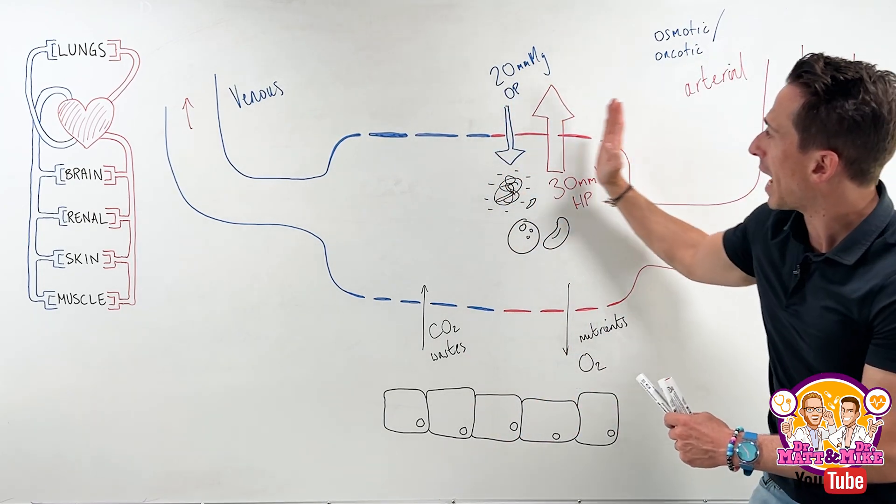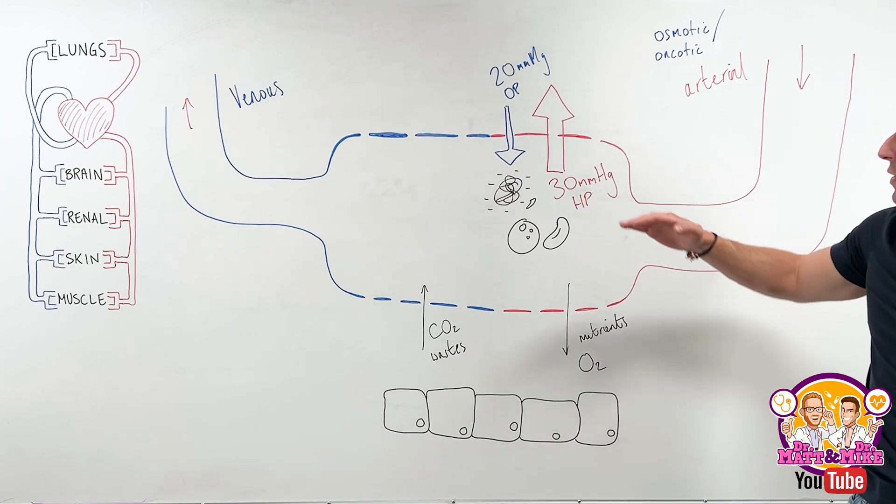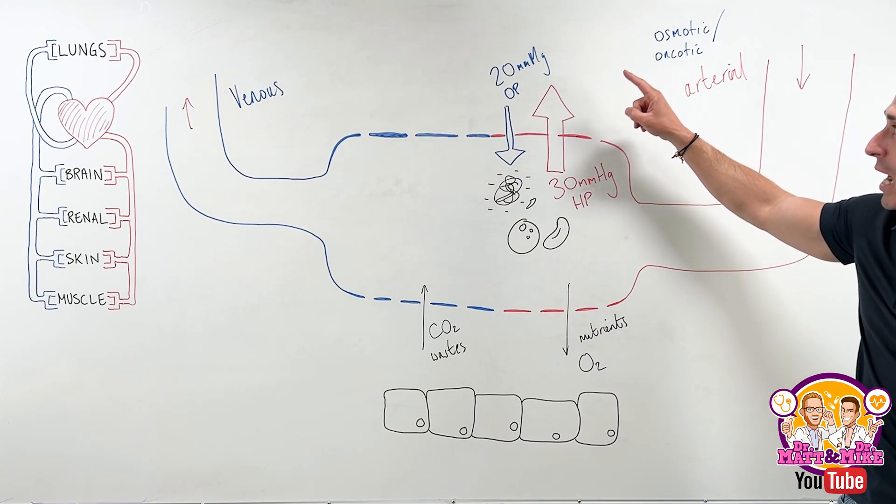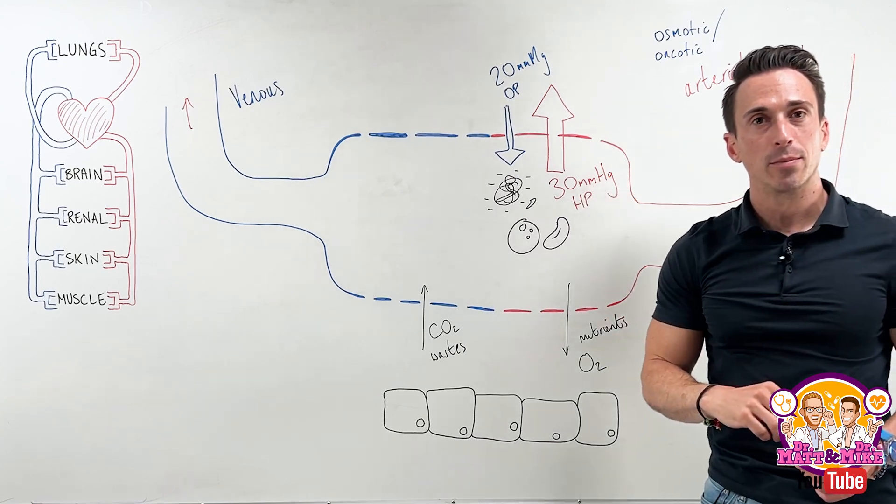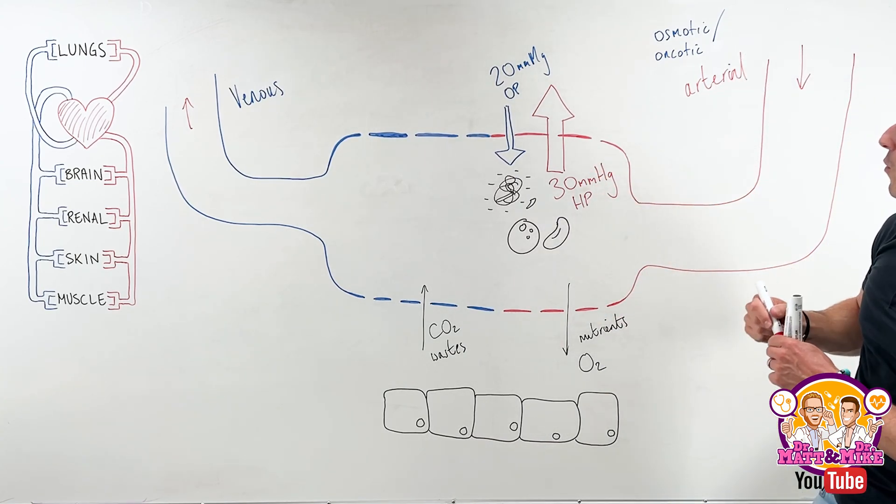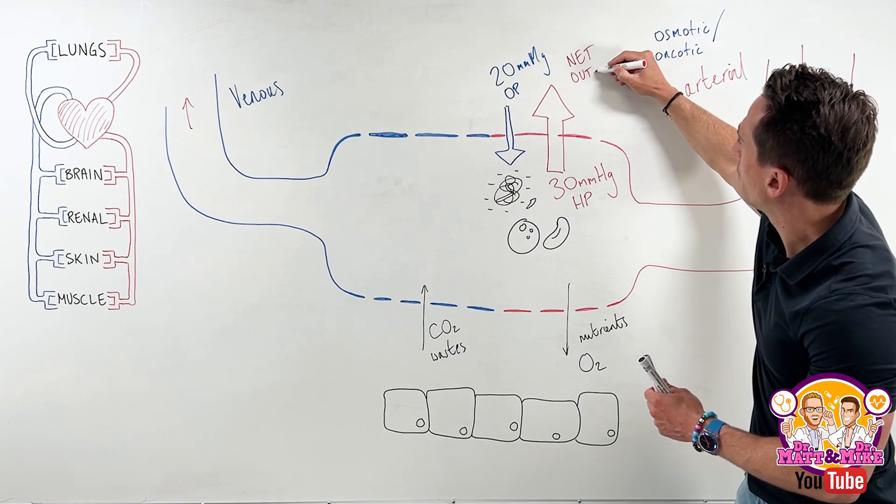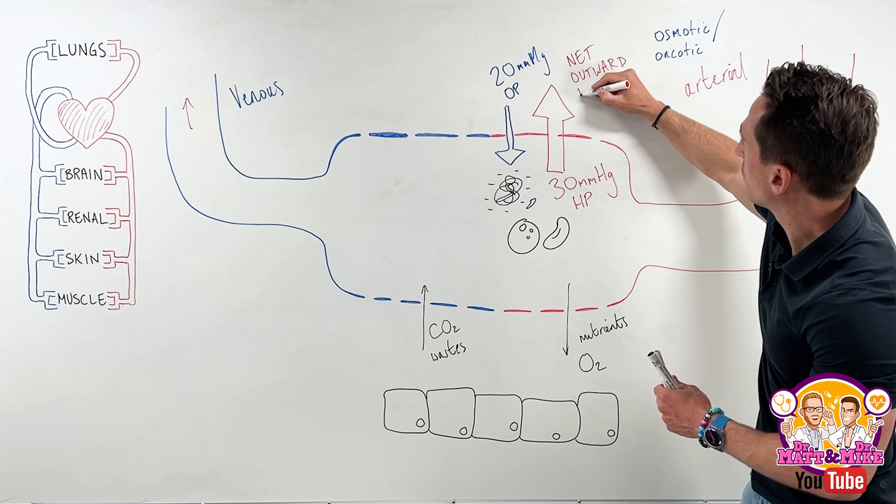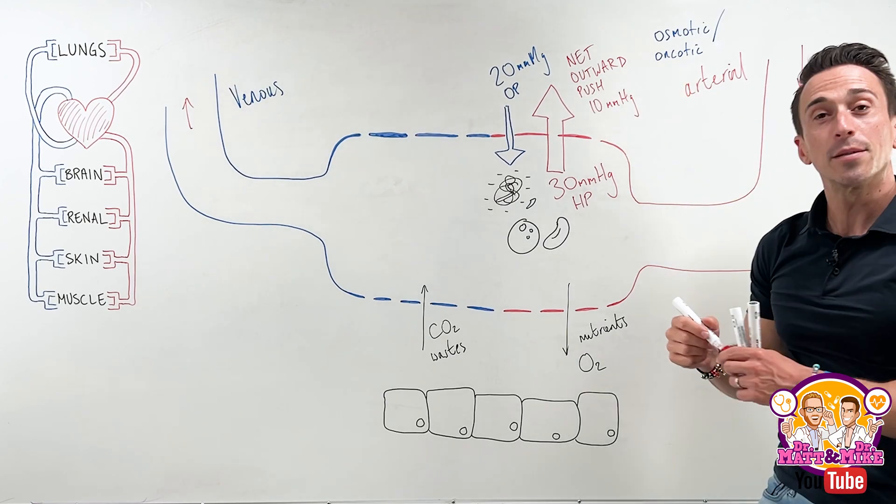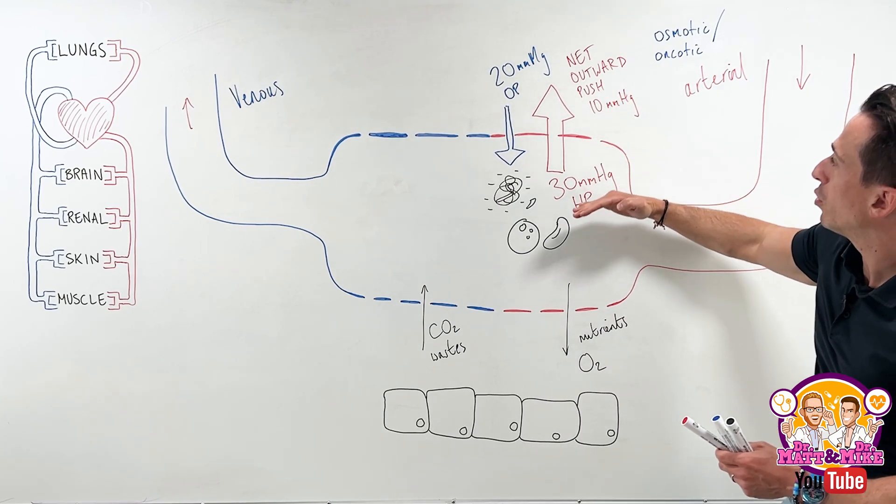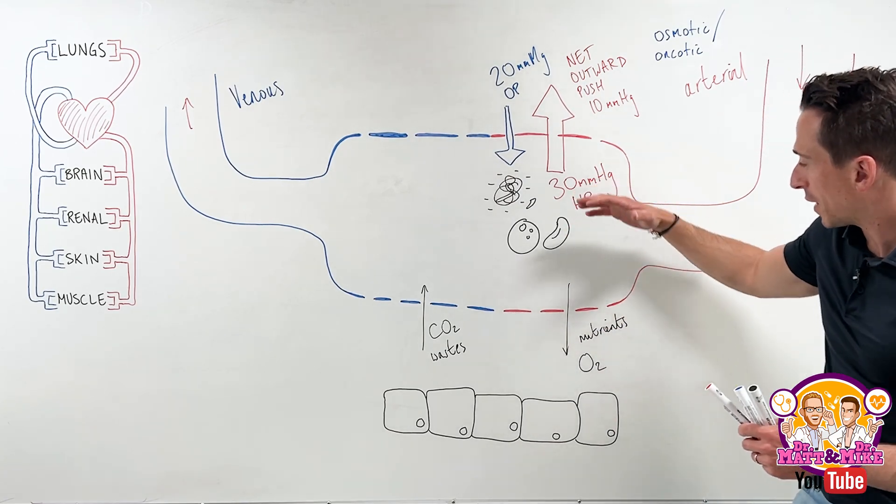We're still on the arterial end here. What wins? An outward push or an inward pull? If you've got 30 people pushing something out and only 20 people pushing something in, who's going to win? The 30. And it wins by, what's the difference? 10 millimeters of mercury. So what you're going to find is on the arterial end, there is a net outward push of 10 millimeters of mercury. This is important because it's this outward pushing force. It wins, things go out on the arterial end, nutrients and oxygen. These are the things that go out.